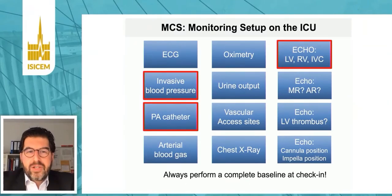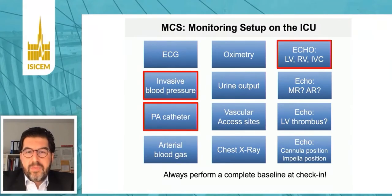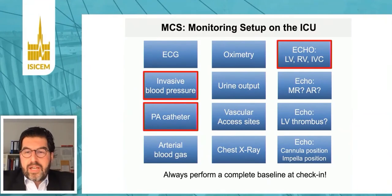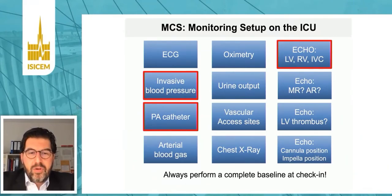With a PA catheter, you can directly measure pressures and flows — for example, central venous pressure and mean arterial pressure measured by arterial lines. In addition, you can measure mean pulmonary arterial pressure, pulmonary capillary wedge pressure, and cardiac output or cardiac index. You need to take into account that in patients on VA ECMO, depending on the venous cannula position, thermodilution might not be as reliable as compared to patients with an impeller pump or other devices not introducing an extracorporeal shunt.